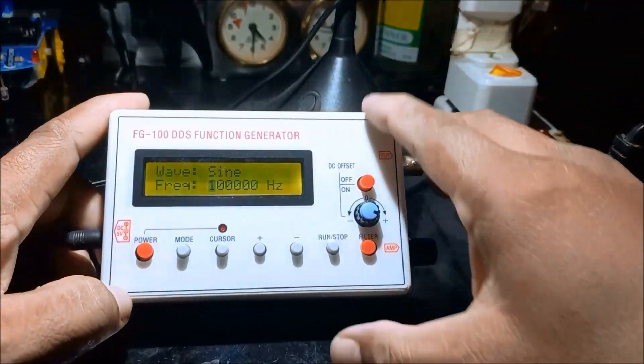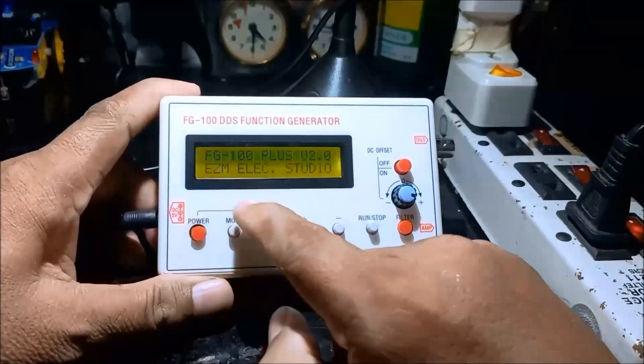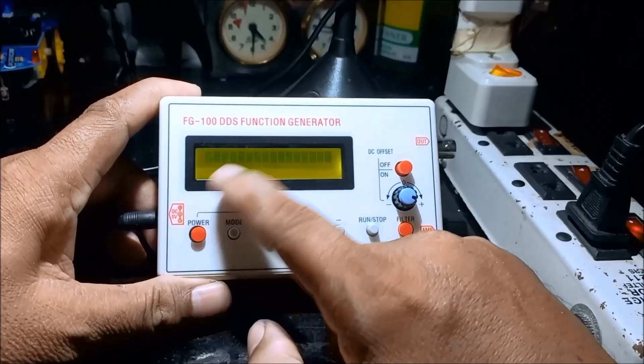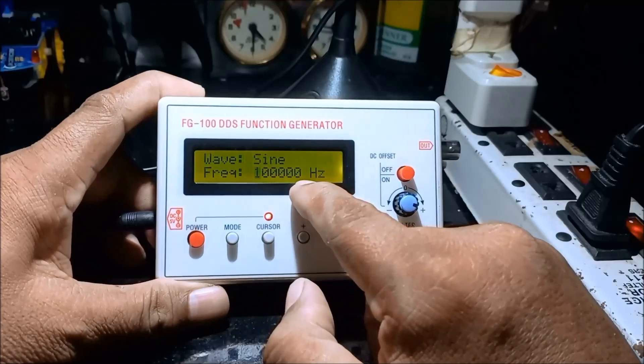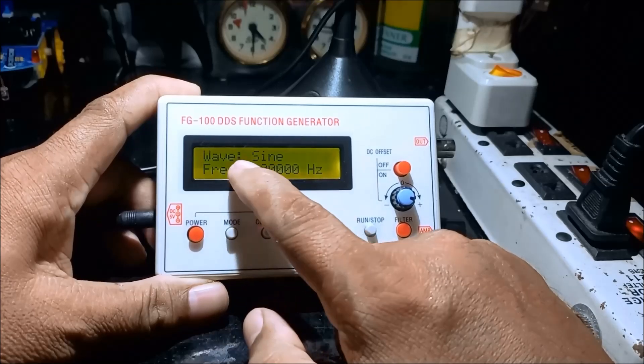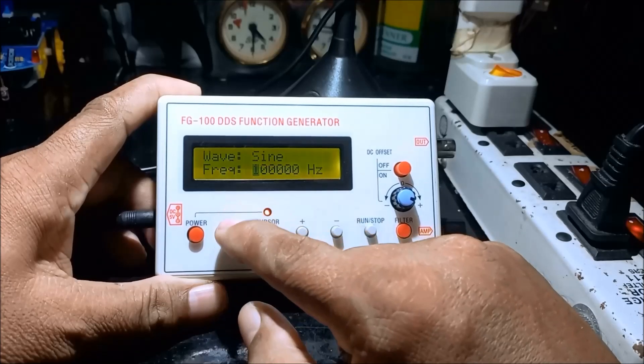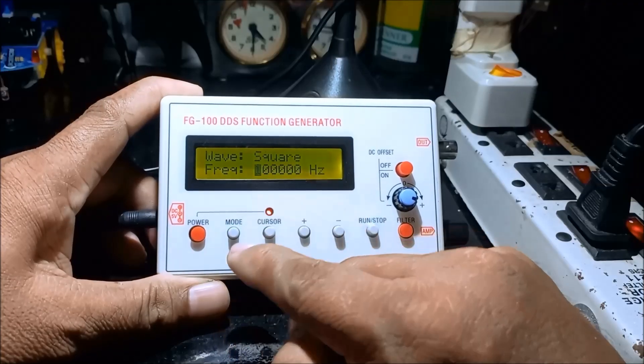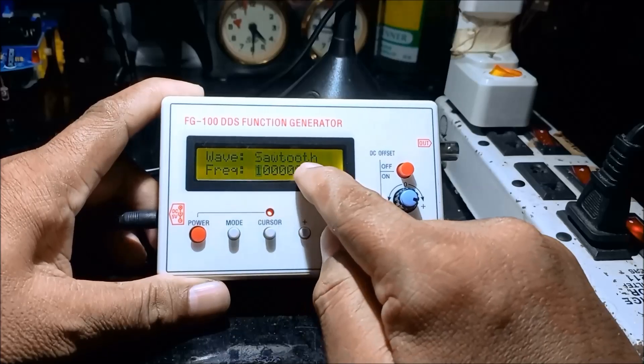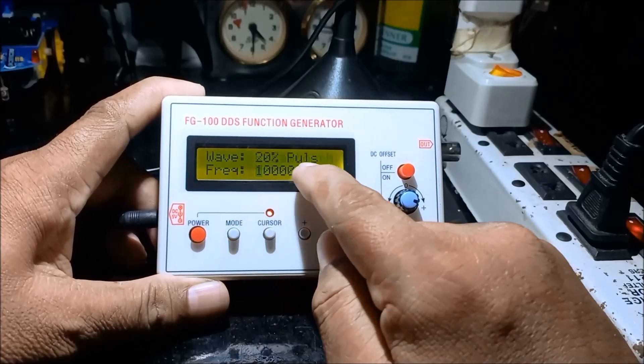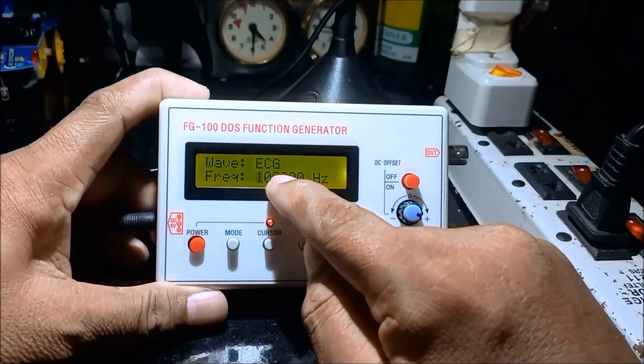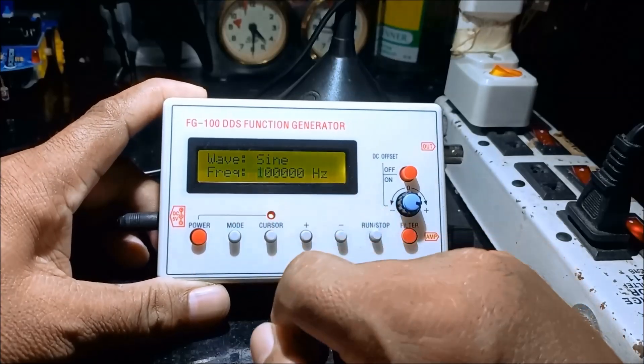So here we have the power. FG100 plus 2.0. EZM LX studio. And then mode. We can select what waveform. Sine wave, triangle, sawtooth, resawtooth, 20% pulse, ECG, sine wave again.